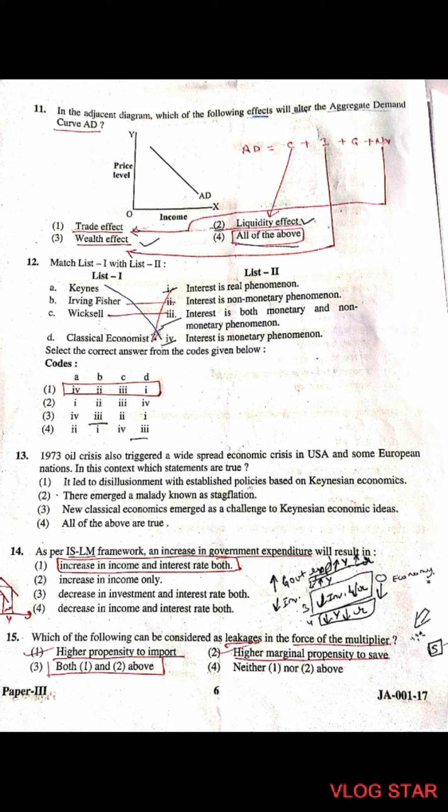Question 12: Match the following on theories of interest. Keynes said interest is a monetary phenomenon. Irving Fisher said interest is a non-monetary phenomenon. Wicksell said interest is both monetary and non-monetary. Classical economics said interest is a real phenomenon. The correct matching is A-4, B-2, C-3, D-1.